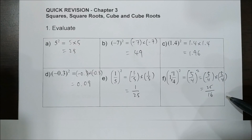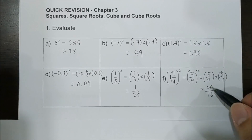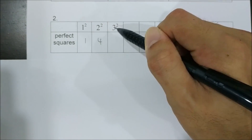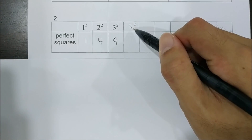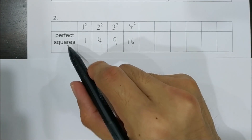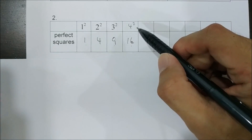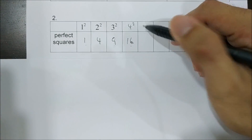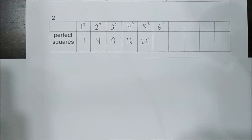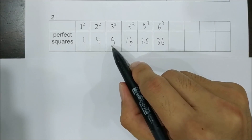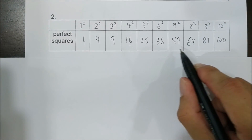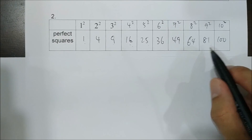Even though we can use a calculator to get the answers, you need to know the basic concept or how to get the values manually. 1 squared is 1, 2 squared is 4, 3 squared is 9, 4 squared is 16, 5 squared is 25, 6 squared is 36. All these numbers are called perfect squares. The definition is: perfect squares are numbers which are the square of whole numbers. It's better you get familiar with these numbers.